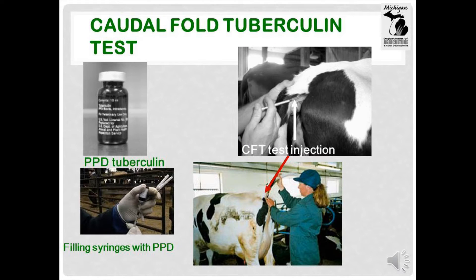When conducting the caudal fold tuberculin test, a veterinarian injects a small amount of PPD tuberculin into the caudal fold. PPD is purified protein derived from bovine TB and is immunogenic. Immunogenic means it will stimulate the immune system. This means that if the cow has been exposed to bovine TB or related bacteria, it will recognize the PPD protein and respond with an immune response at the site of the injection. The veterinarian first loads one syringe for each cow to be tested, then injects the PPD tuberculin as shown on the right of this slide.